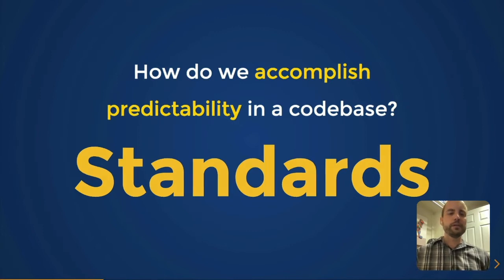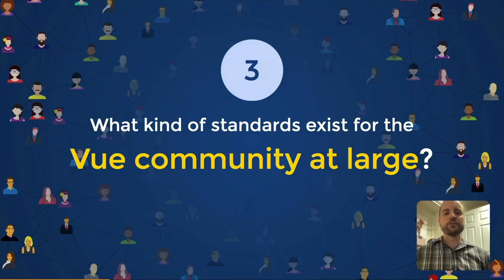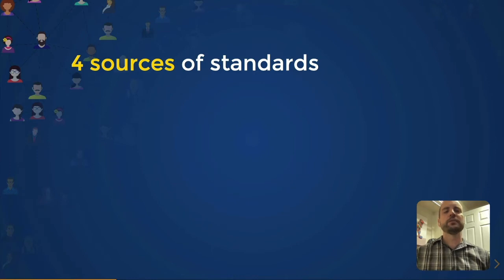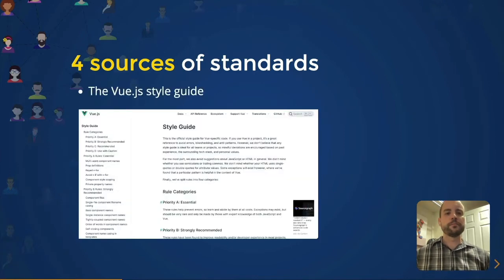So that begs the question: what kind of standards exist for the Vue community at large? What are the standards we can all share, whether working alone, on a small team, or anywhere across the world? In my eyes, there are four sources of standards across the Vue.js community. The first is the Vue.js style guide — probably the most obvious, because its literal purpose is to provide a set of standards for us all.